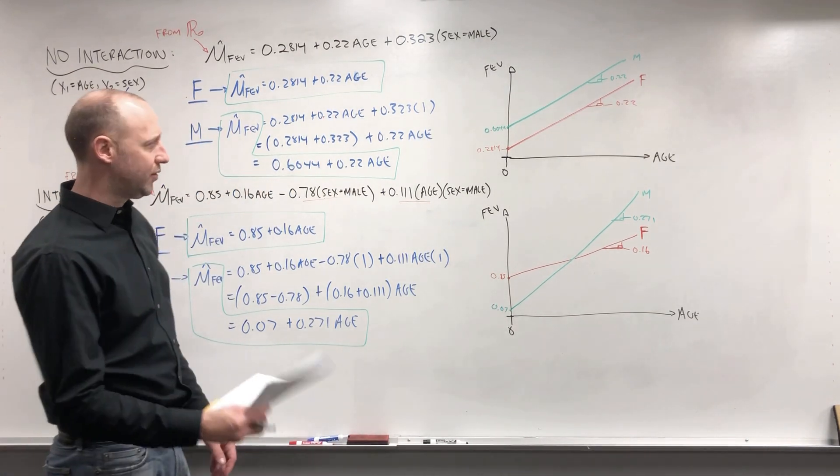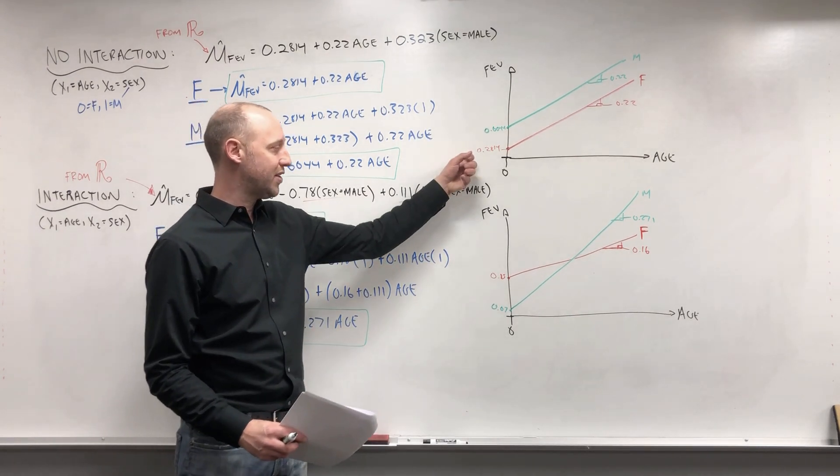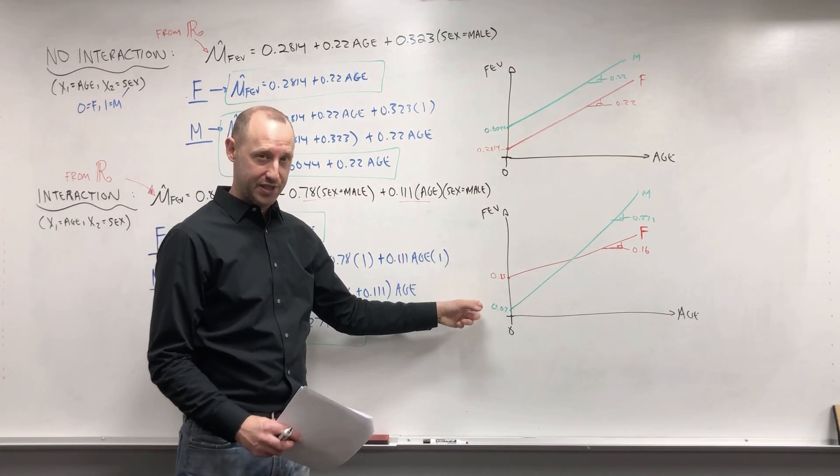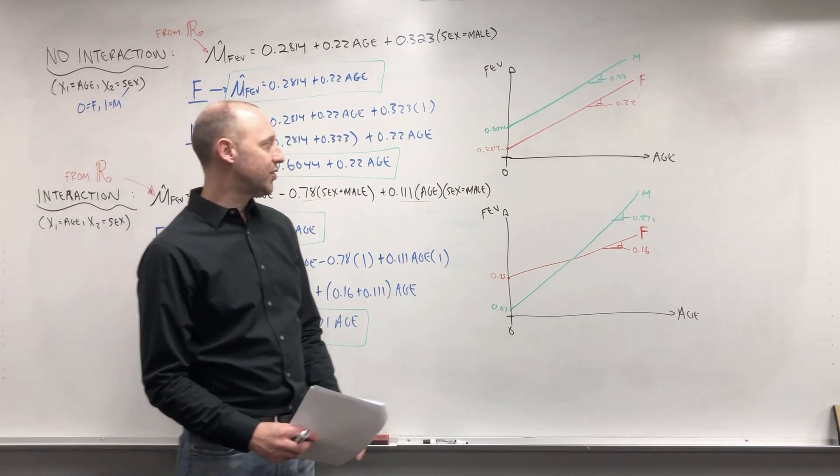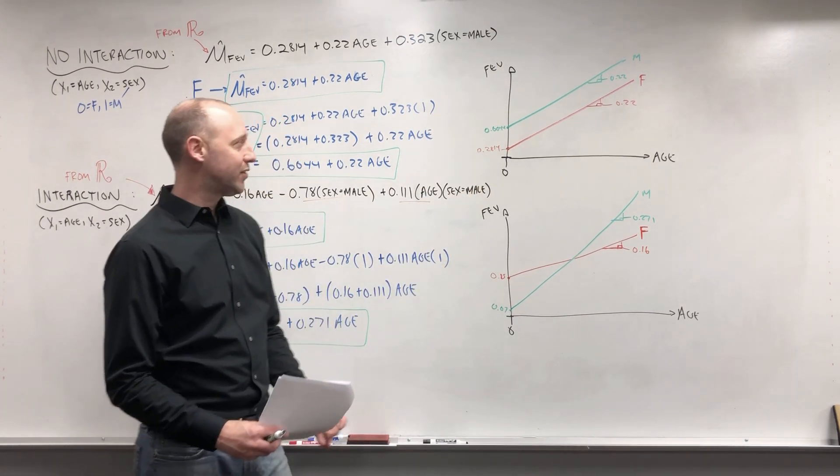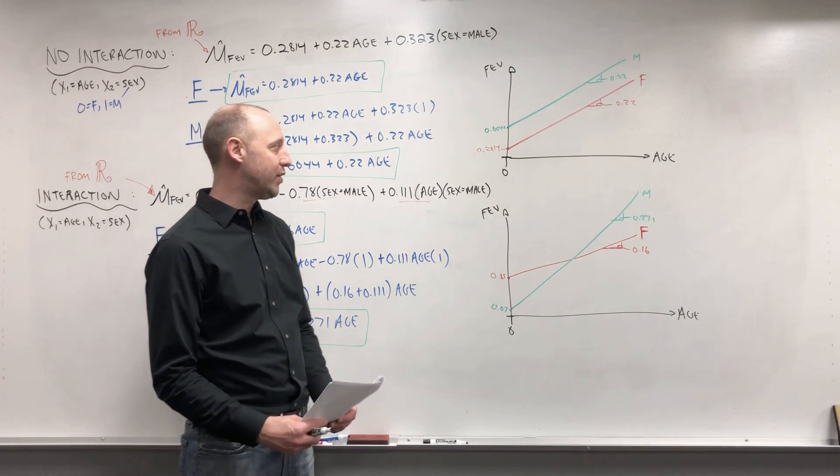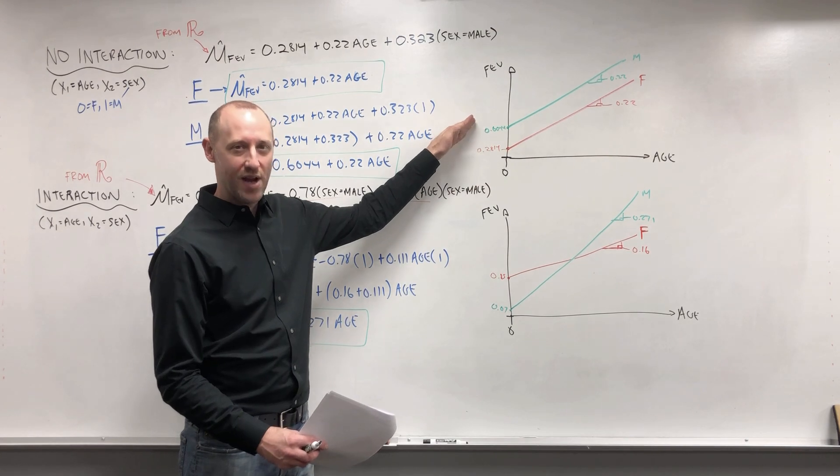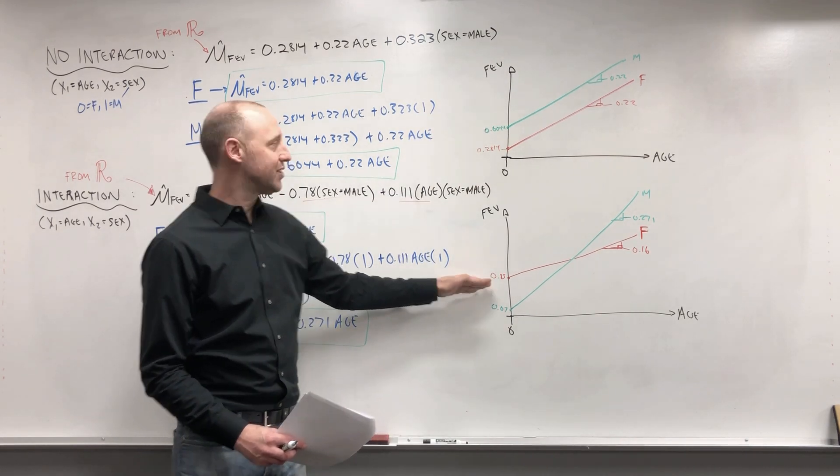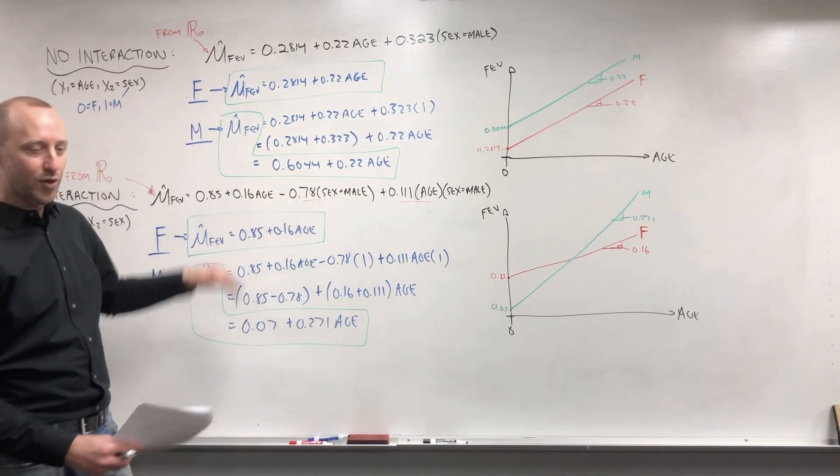So what we're going to learn as we go through the course and talk about interaction or effect modification is first try to think about which one of these models makes more sense conceptually, and then we'll also learn statistically which one seems to better fit the data or better describe the relationships that we're observing within the data. Okay, for now what we want to do is just talk about this is what no interaction looks like, this is what interaction looks like. Here's how we can work with the models and get each of the lines from the full model expression. Look around guys, there's more to see and please stay safe.